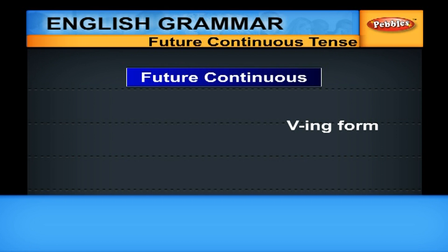You have to use 'will' or 'shall', and in between you have to insert 'be'. So we can say: future continuous is equal to will or shall, plus be, plus present participle or V-ing form.